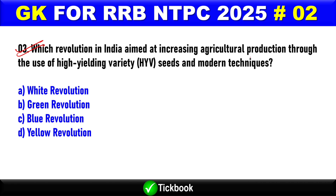Question number 3: Which revolution in India aimed at increasing agricultural production through the use of high yielding variety (HYV) seeds and modern techniques? Option B is the right answer — the Green Revolution.